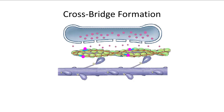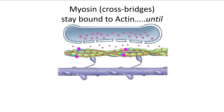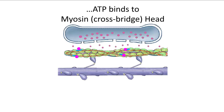Once the active site is exposed, myosin immediately lifts and binds to actin. The joining of myosin and actin is called a cross-bridge. When the myosin head binds to actin, the cross-bridge head pivots, pulling actin over — and this movement of actin is the contraction or muscle shortening process.